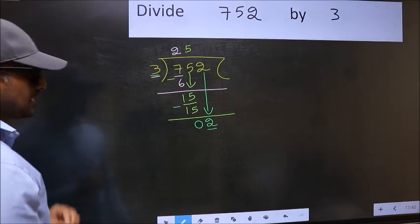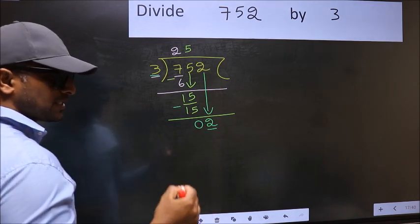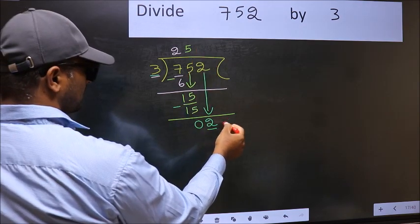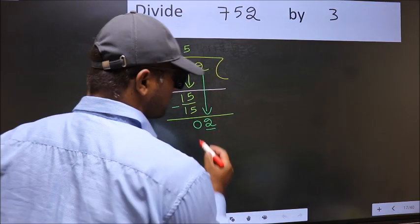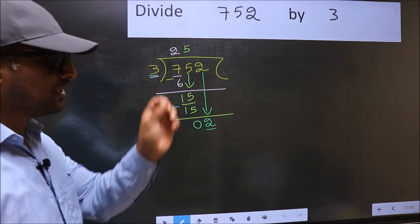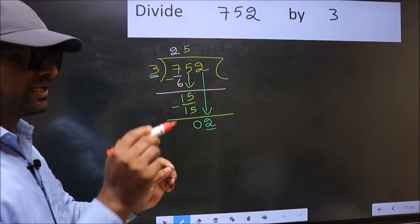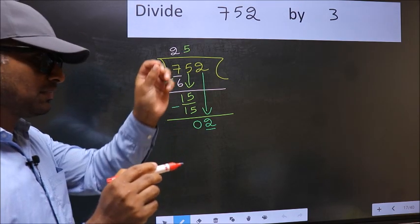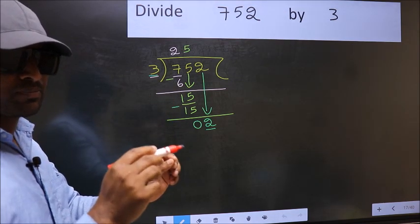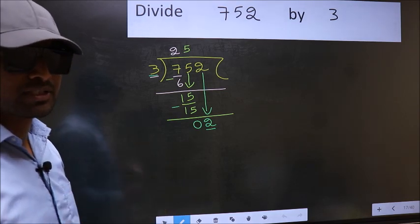Because just now you brought this number down. And in the same step, you want to put a dot and take 0. Bring the number down and put a dot and take 0. Both at the same step. You are not supposed to do.